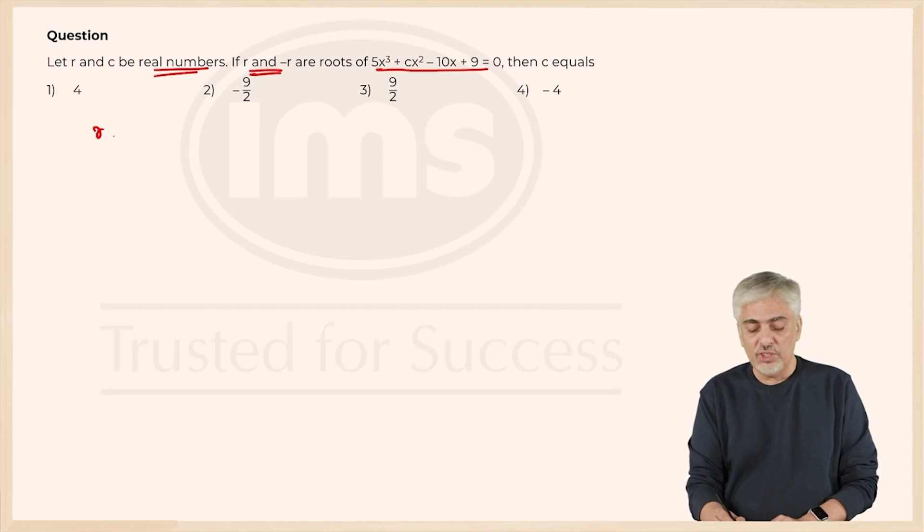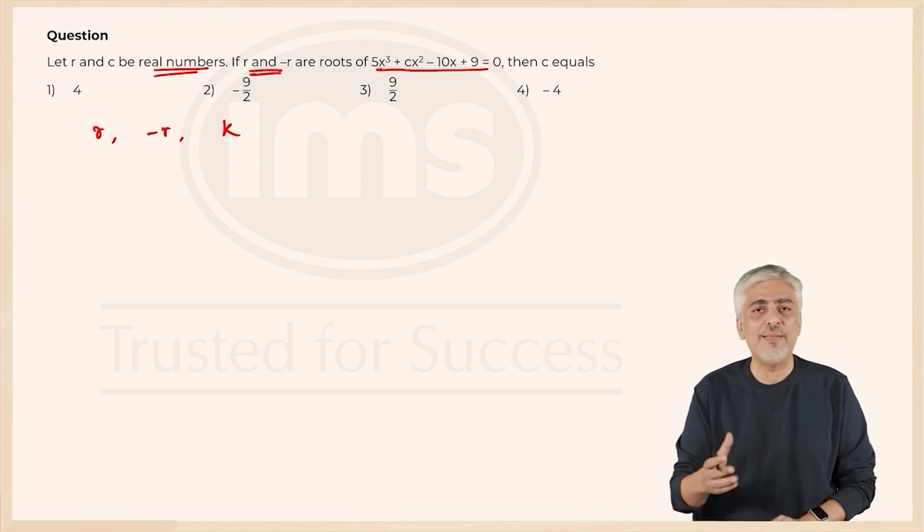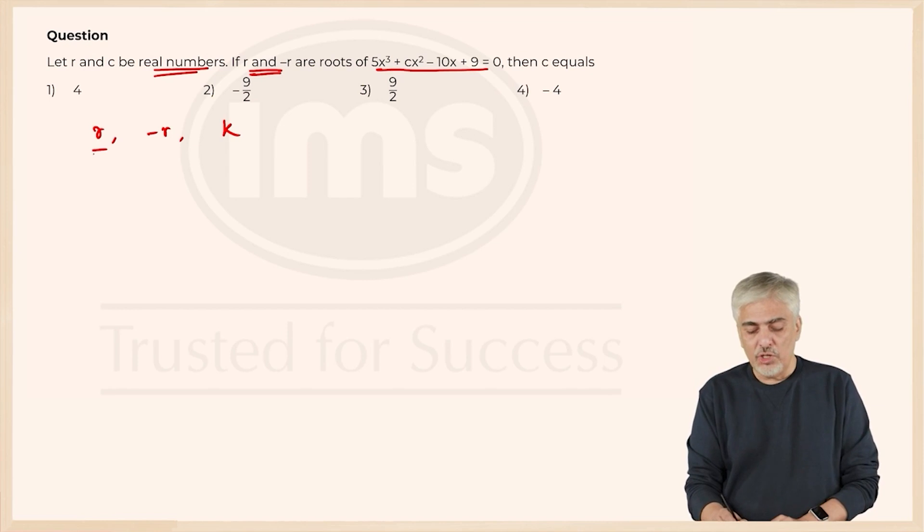So, the first two roots are already r and minus r. Let us put the third root as k, just any random. I could have taken alpha, beta, gamma, so I could have taken gamma. I have just taken k. So, I have got the first root as r, second root as minus r and third root as k.